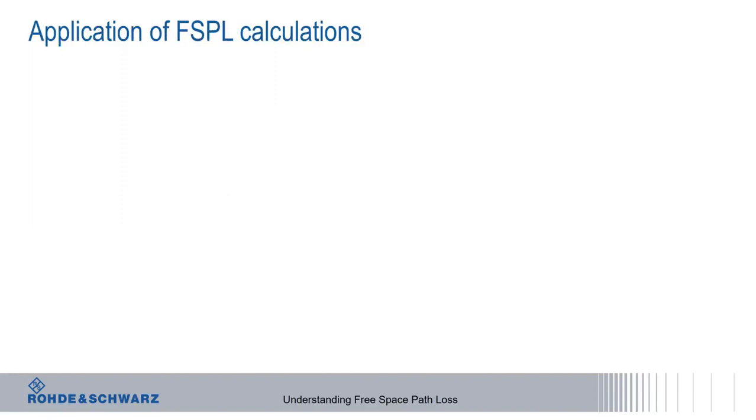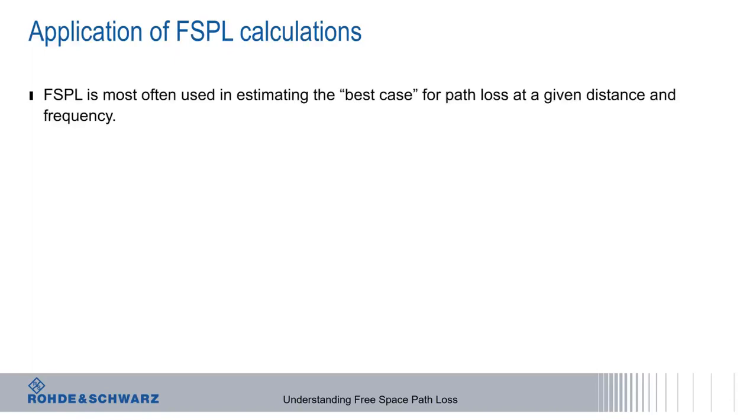We mentioned that free space path loss is a calculation, not a measurement. So, how and where would we actually use free space path loss calculations? The main application for free space path loss is estimating the best case of path loss for a given distance and frequency. In other words, what is the minimum signal loss along a given path?